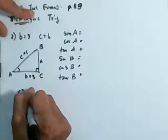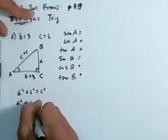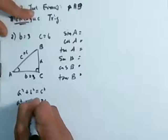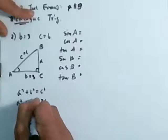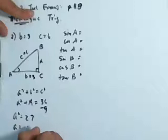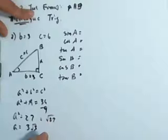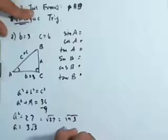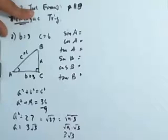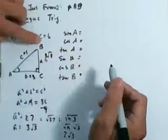Obviously you're going to have to use the Pythagorean theorem to figure that out. So A squared plus B squared is equal to C squared. A squared you don't know, plus B squared which is 9, is equal to C squared which is 36. So A squared is equal to 36 minus 9, which is 27. So A is equal to 3 radical 3, or square root of 27. If you want to simplify that, it's the same thing as square root of 9 times 3, which is square root of 9 times square root of 3, which is 3 radical 3.